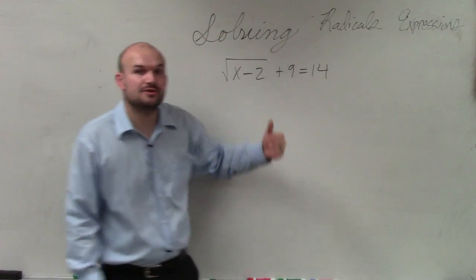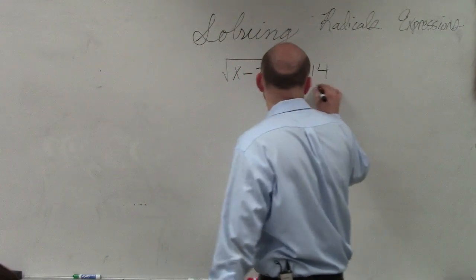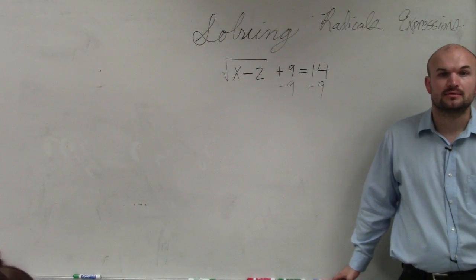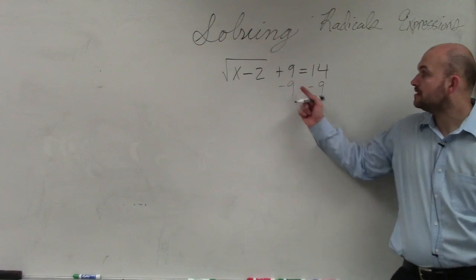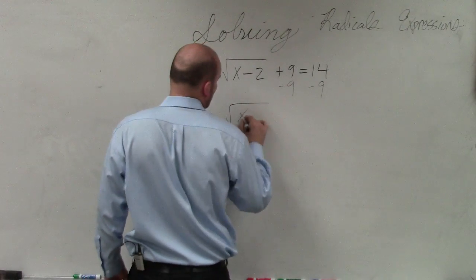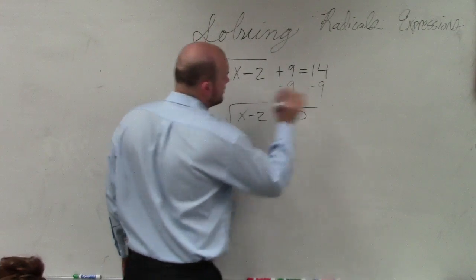So the first thing we need to do is undo adding by 9. We're going to subtract 9 from both sides. Therefore, I have the square root of x minus 2 equals 5.